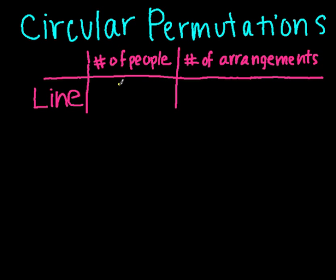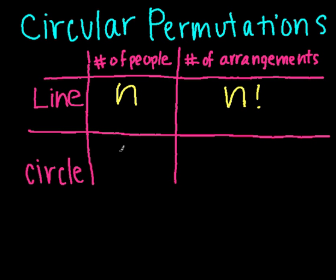We know that if we have n people, there are n factorial different orders in which we can line all of them up. However, what if we wanted to find out how many ways n people could be arranged if they were sitting in a powwow circle?